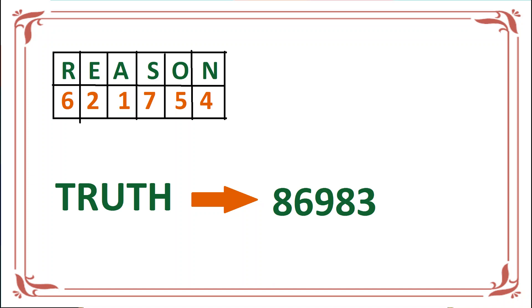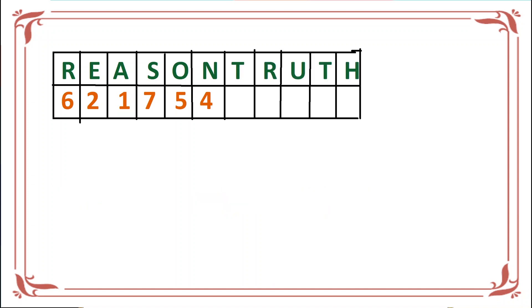Again we'll do the same here. For REASON, the code given is 621754. We write REASON in this table, separating each alphabet, then the assigned values. Similarly, for TRUTH, the code is 869823.